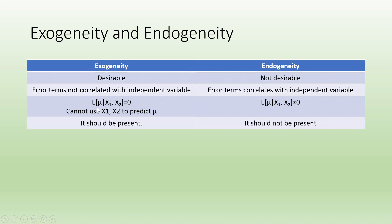Under exogeneity, the expected error term given x1 and x2 equals zero — you cannot use x1 or x2 to predict the error term. Under endogeneity, the expected error term given x1 and x2 is not equal to zero. Exogeneity should be present; endogeneity should not be present.